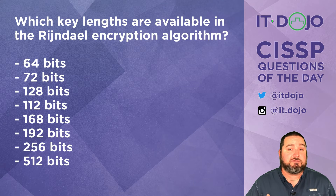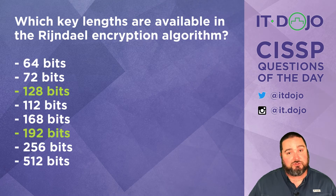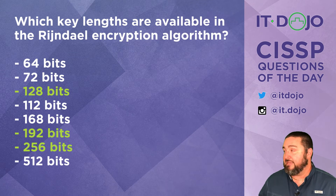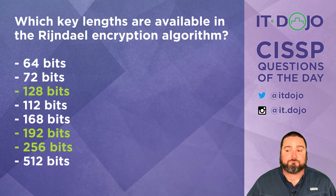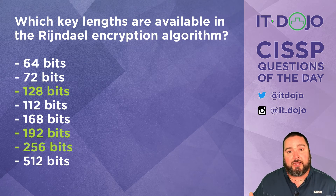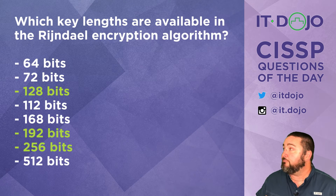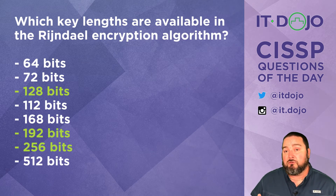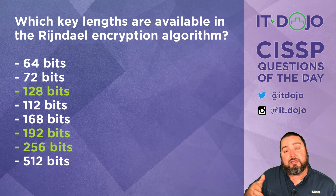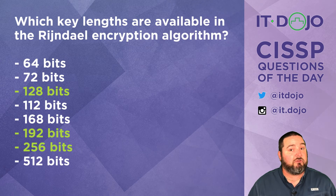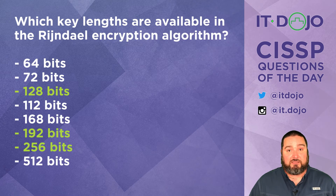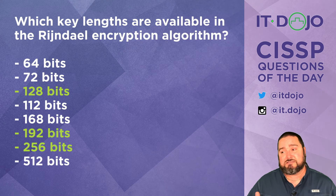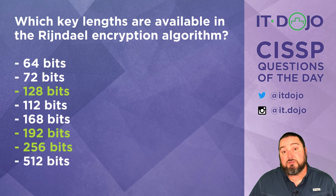The right answer here is 128, 192, and 256. Those are the three sizes that you are typically going to see AES or Rijndael deployed in. Now, there's the technical nature of this and then there's the practical reality of it. Technically, Rijndael supports keys in 32-bit increments with a minimum size of 128 bits — so any increment of 128 plus 32 plus 32 plus 32 would technically be correct. But in practice, I've never seen an implementation of AES using Rijndael be anything other than 128, 192, or 256. From a technical perspective, anything that's 128 bits and greater in increments of 32 is valid.